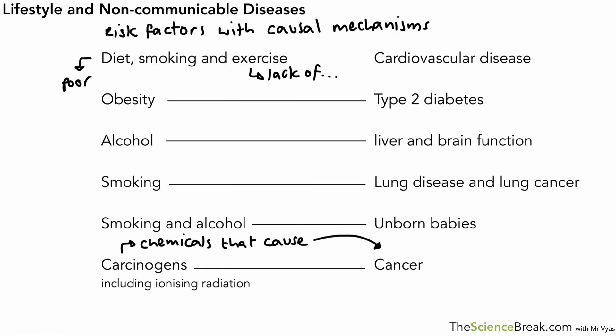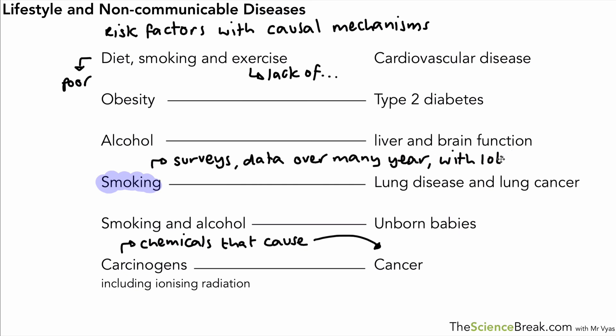Smoking's link with cancer has been established over time through large surveys and long-term data with many people. We also have causal mechanisms — experiments examining the effect of chemicals found in cigarette smoke on living cells. Remember, smoking increases the chances of lung disease and lung cancer; it's always about increasing chances, not definitely causing. We can't say alcohol definitely causes liver problems — there's an increased chance. All of these risk factors increase the chances of those non-communicable diseases.